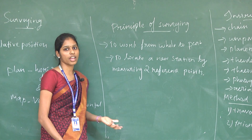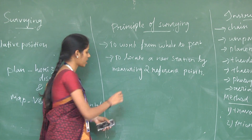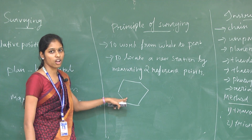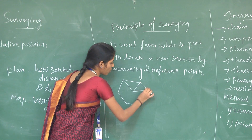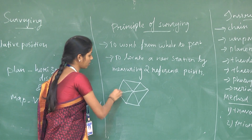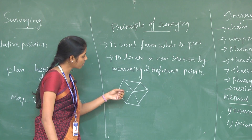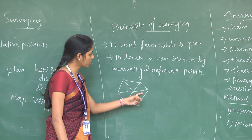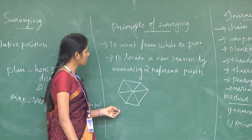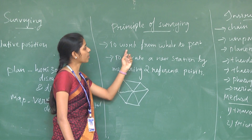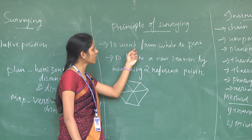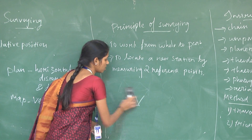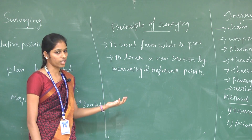In the first principle — working from whole to part — a larger area is divided into a smaller number of triangles. For example, if we take a hexagonal area, we split its boundary into a number of triangles. This process is called triangulation. By measuring the area of these smaller triangles, we can measure the total boundary area. The main advantage is that errors occurring during computation of any boundary area can be eliminated.